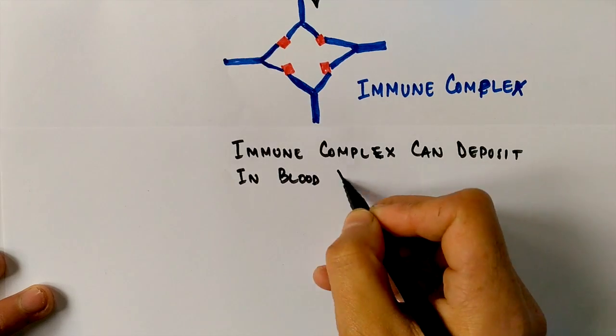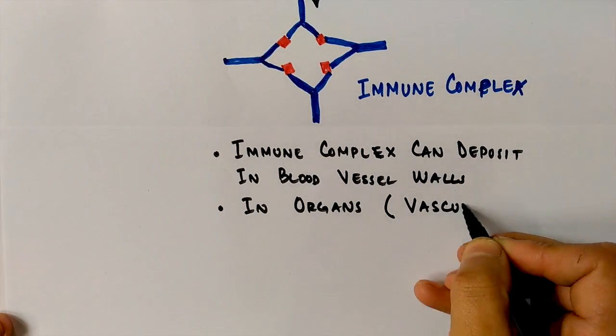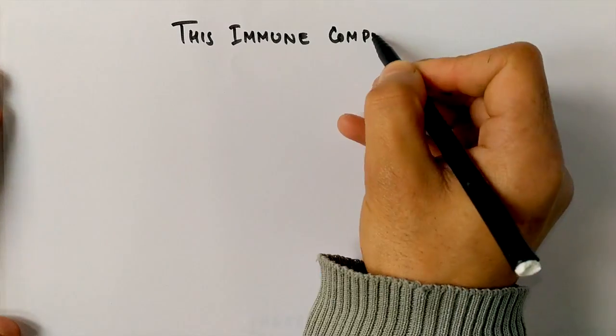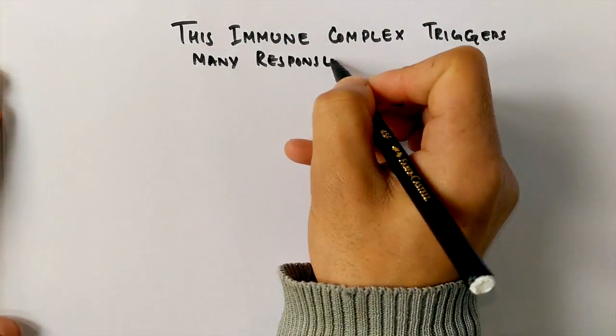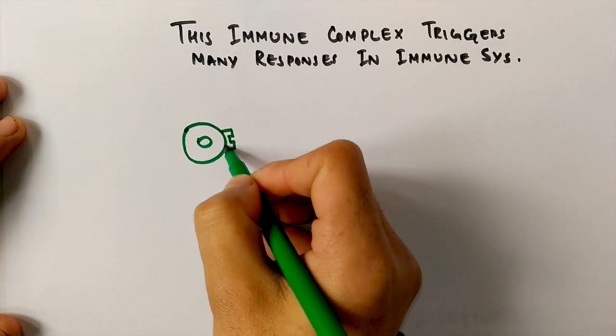These immune complexes can deposit anywhere in our immune system or in our circulatory system, thereby causing several diseases that I have already mentioned. Let's find out how this immune complex triggers the immune response in our immune system.